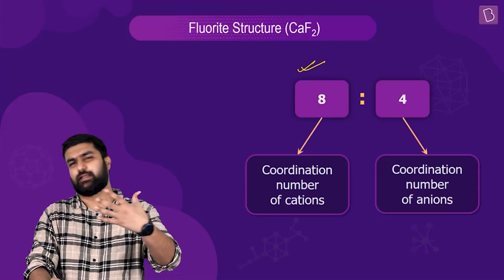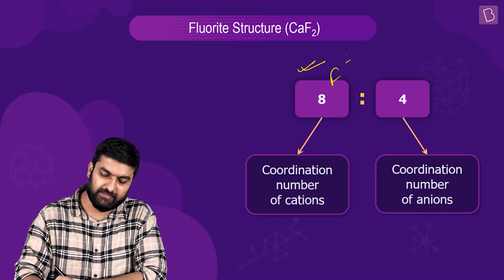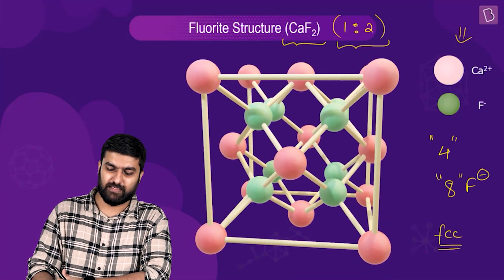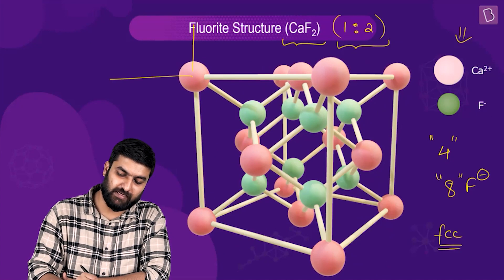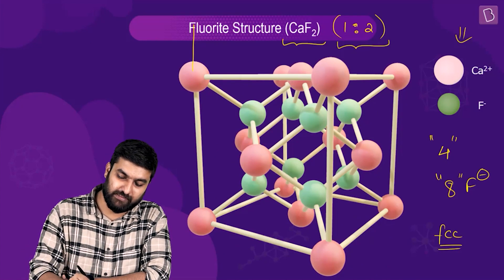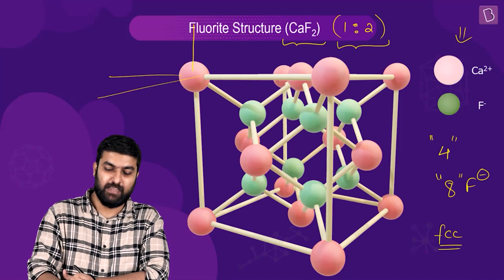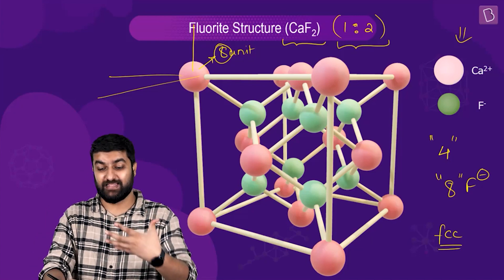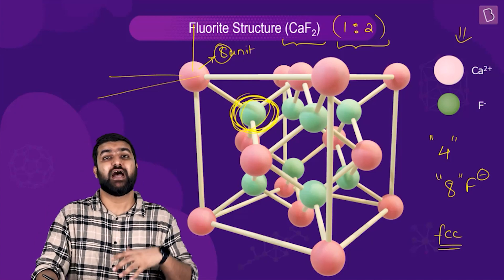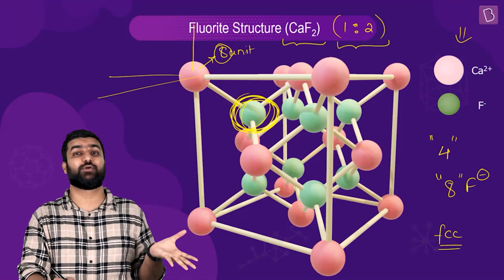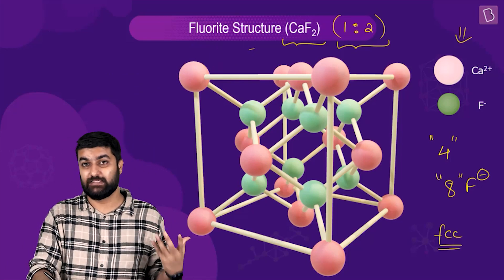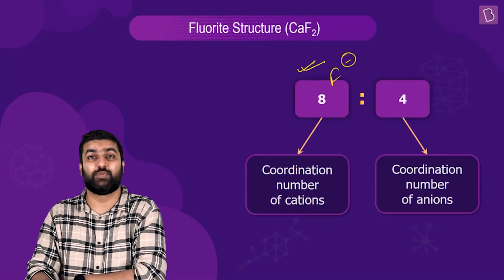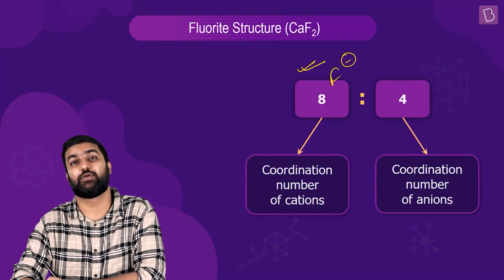Each Ca²⁺ cation is going to have eight F⁻ in contact with itself. Let's see how: this corner cation will be part of eight unit cells. In one unit cell the nearest anion is one particular F⁻, so across eight unit cells there are eight overall nearest anions for this corner cation. That's why its coordination number is eight.